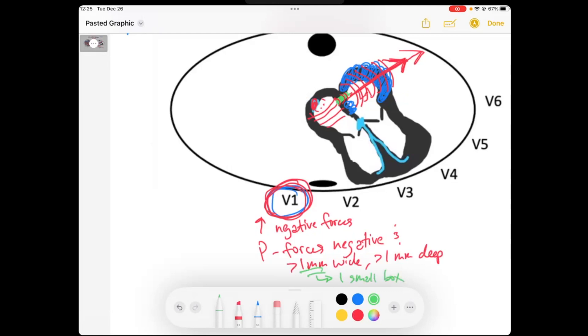So really, you could say 1 millimeter wide and deep or just one small box. So if we have a negative deflection, that negative deflection on that P wave is larger than one small box. And that's the criteria for left atrial enlargement.